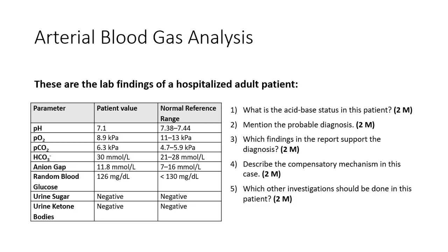There are a few cases noted, like arterial blood gas analysis. Based on this category of case report, ABG analysis is asked. Parameters, patient values, and normal reference ranges will be given. A clinical scenario may or may not be given. The lab report and laboratory values will be given, based on which you have to attempt the questions. Marks are allotted depending on content — there may be 5 questions at 2 marks each, or 4, 3, or 2 questions at 5 marks each, depending on the lab report.